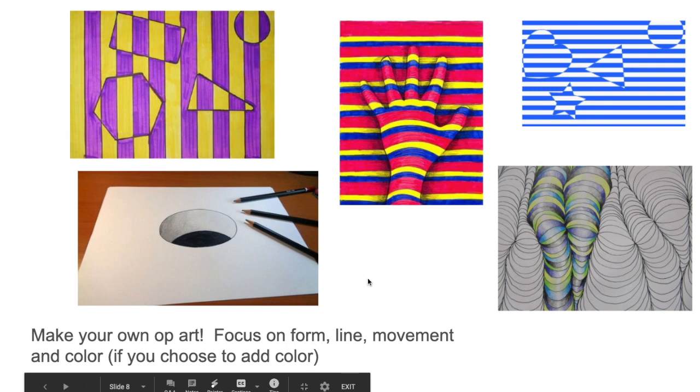But one thing I want you to do is also focus on one or more elements of art. So we're studying op art, but elements of art that really can create your optical illusions. You can focus on form, which is showing something three dimensional like the hands or the worms or the hole in the paper. All of these projects use line in some way. And some of them really heavily use line. Movement. So think about op art that moves your eye around the paper or gives you the illusion of movement.